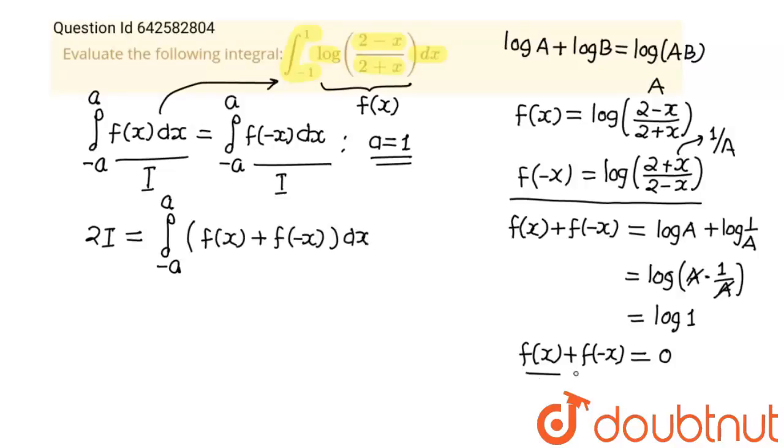And here you can see f(x) + f(-x), for this function its value is 0. So this will become 2I equals integration from -a to a of 0dx. And this value will become 0. So value of I will be equals to 0. And this is our final answer. Thank you students.